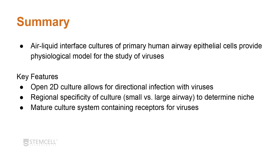To summarize, air liquid interface cultures of primary human airway epithelial cells provide a physiological model for the study of viruses. Key features include an open 2D culture system allowing directional infection, regional specificity to compare small versus large airway and determine viral niche, and a mature culture system containing viral receptors, goblet cells, and ciliated cells that can be used to determine how viruses infect and spread in the airway. Thank you.